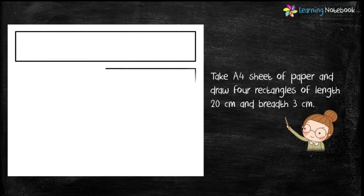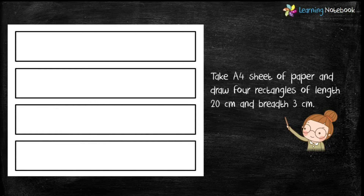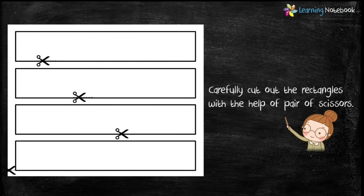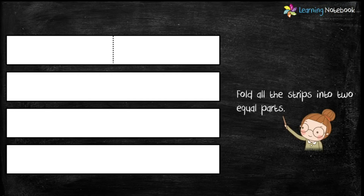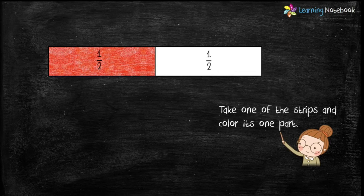So let's start the activity. Take the A4 sheet of paper and draw 4 rectangles of length 20 cm and breadth 3 cm. Then carefully cut out these rectangles using a pair of scissors. In the next step, fold all these strips into two equal parts. Now take one of the strips and color its one part using your favorite color. Students, can you tell me the fraction of each part? Yes, it is 1 by 2, or we can call it half.